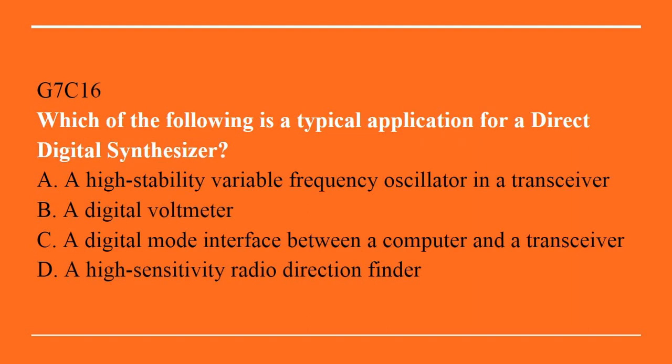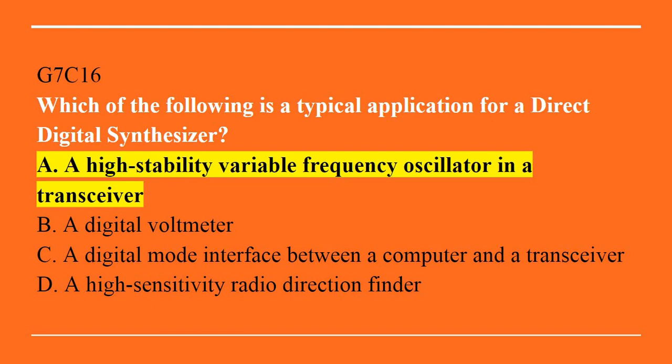G7C16: Which of the following is a typical application for a direct digital synthesizer? A. High stability variable frequency oscillator in a transceiver. B. A digital voltmeter. C. A digital mode interface between a computer and a transceiver. D. A high sensitivity radio direction finder. Answer is A. High stability variable frequency oscillator in a transceiver.